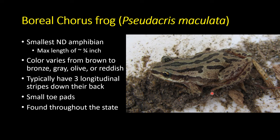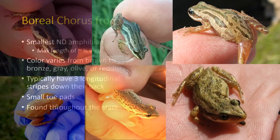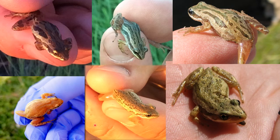They've got really small toe pads — it's not a true tree frog, but it's in the same group, so they do spend some time above the ground and are good climbers. These toe pads help them stick to surfaces. Chorus frogs are found throughout the state and are active callers; they're a little more difficult to find, but are probably one of the more common frogs across North Dakota.